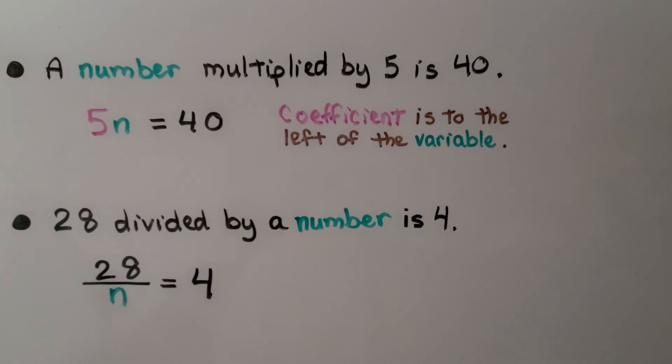28 divided by a number is 4. We can write it as 28, a fraction bar, and then n for some number, and then is equal to 4.